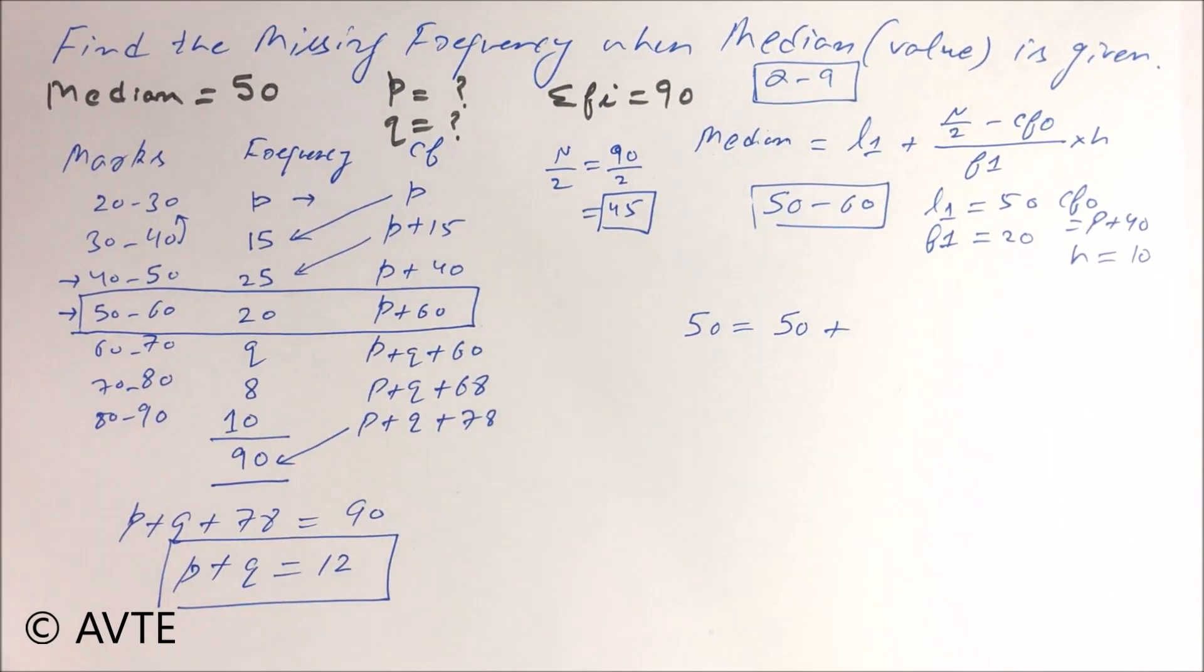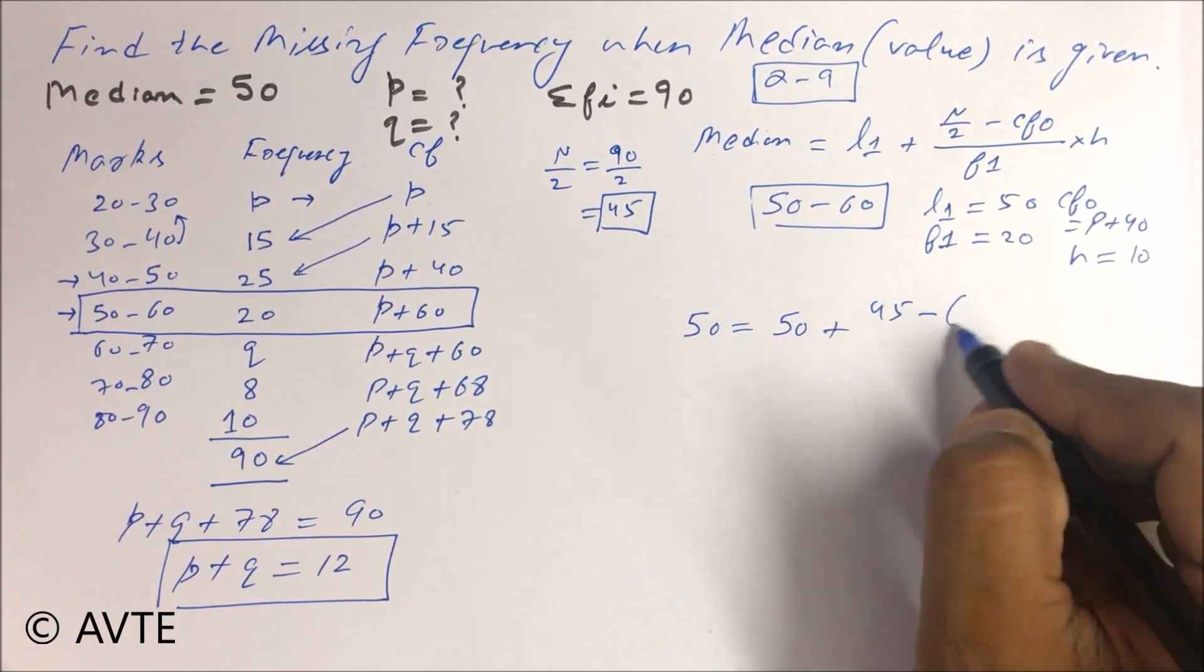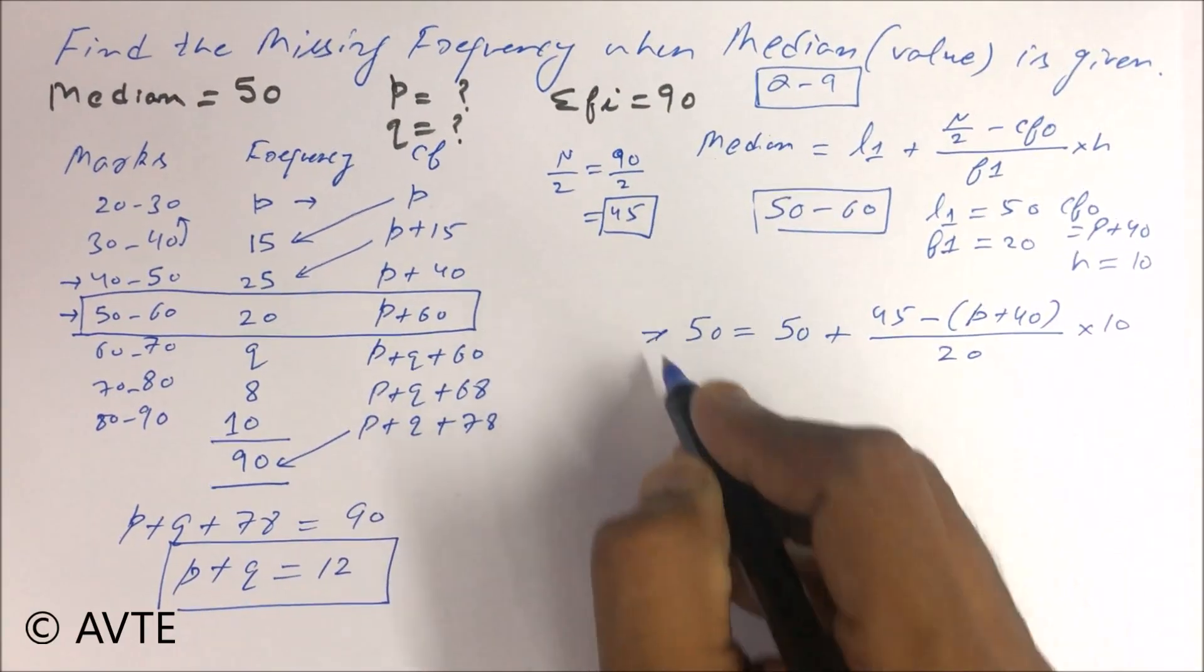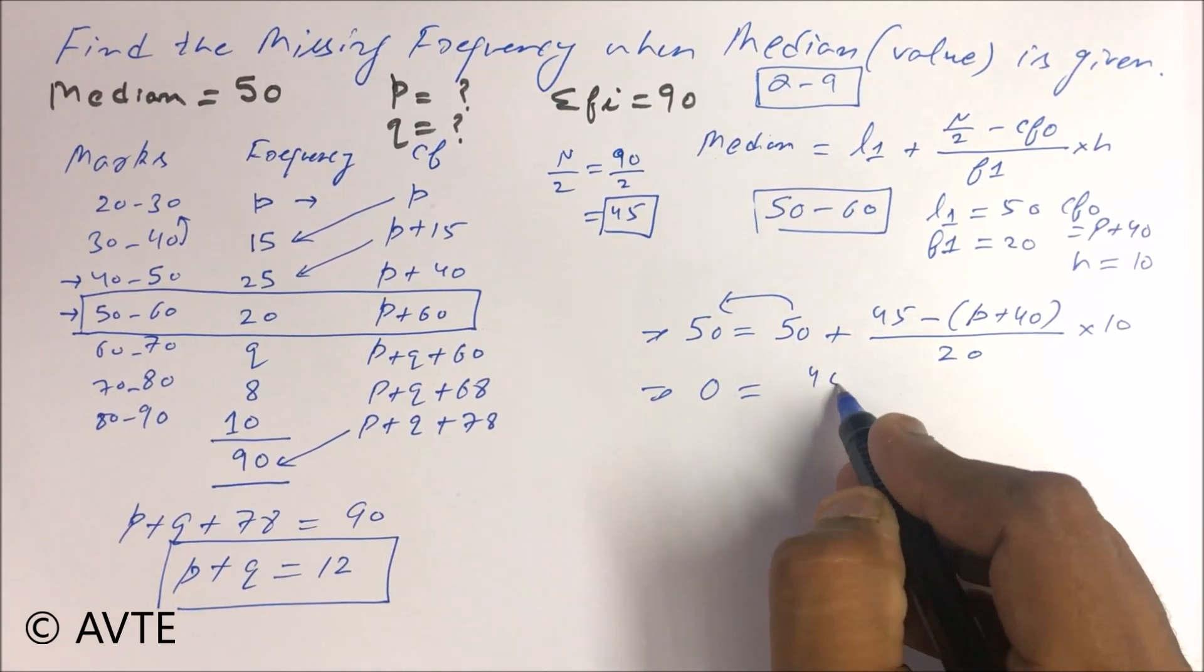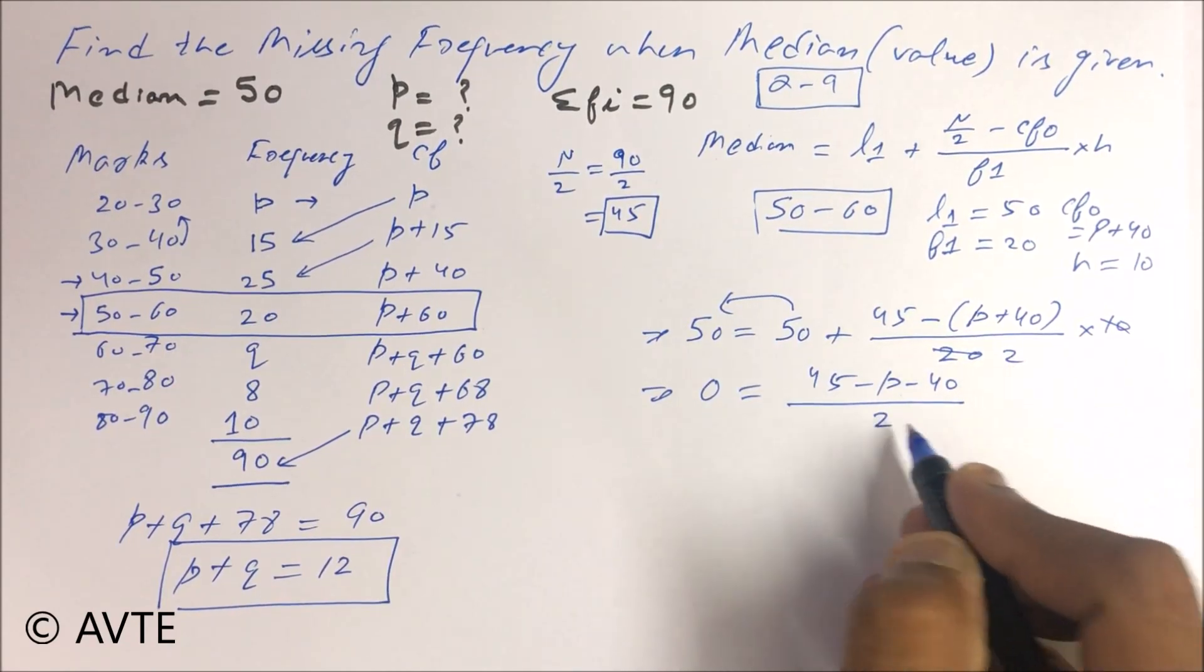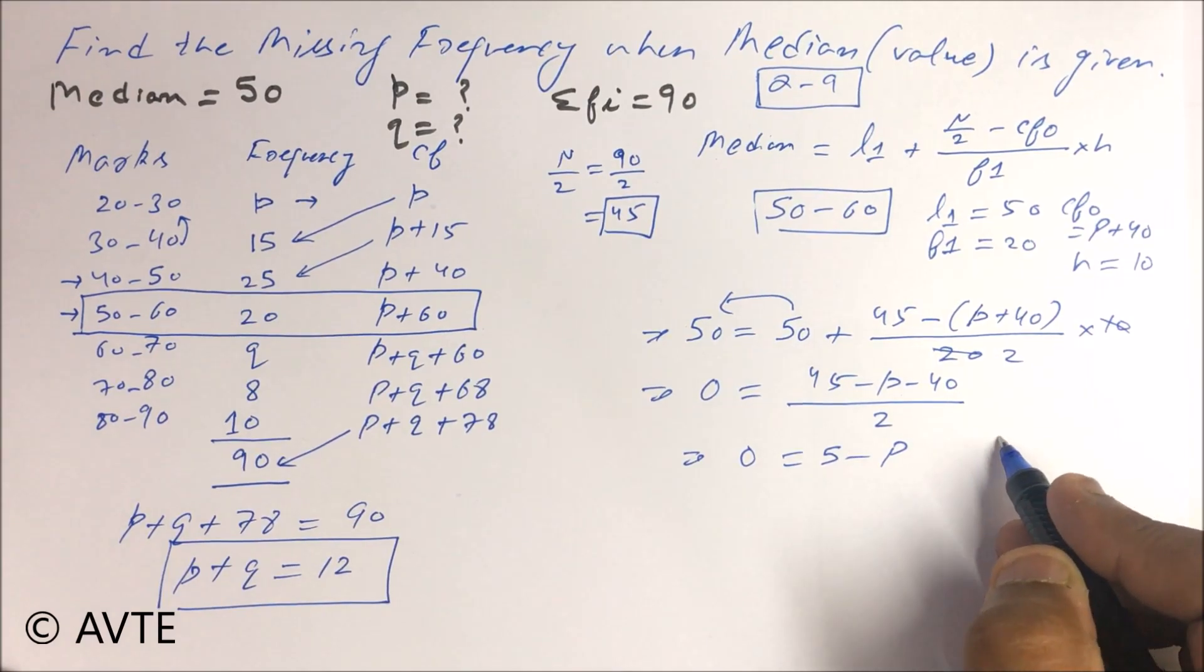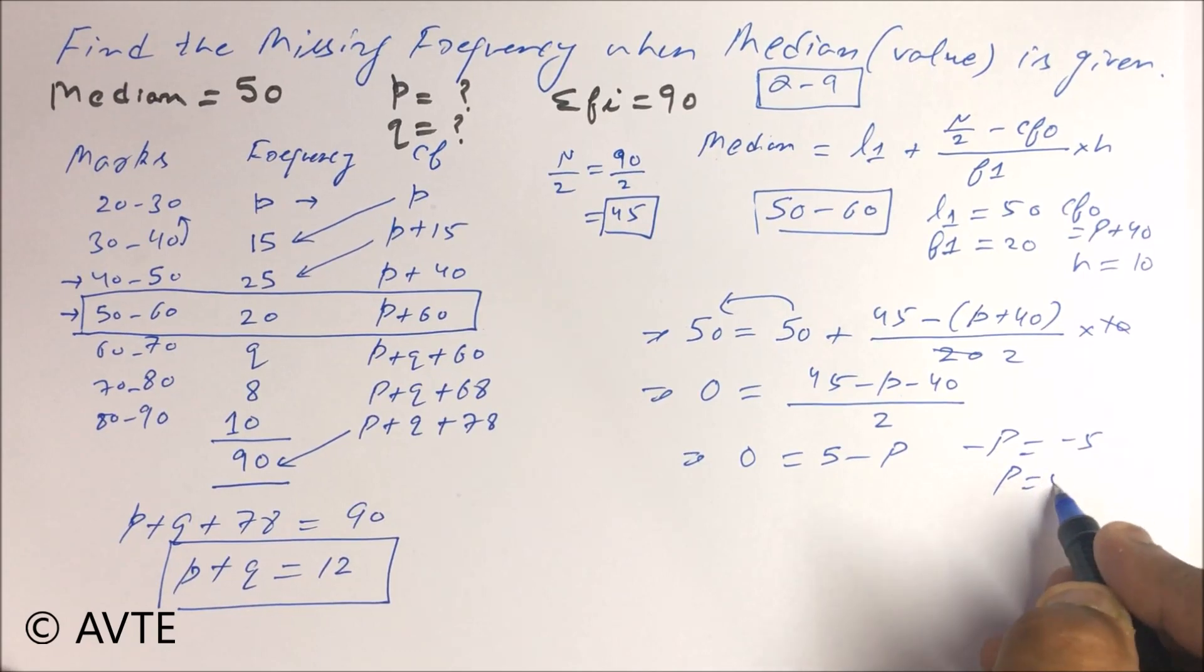Now we have to just place the value. 50 minus 50 is 0. 45 minus P minus 40 upon 2, 2 into 0 is 0. That is 5 minus P, that means minus P is equal to minus 5, then the value of P is 5.